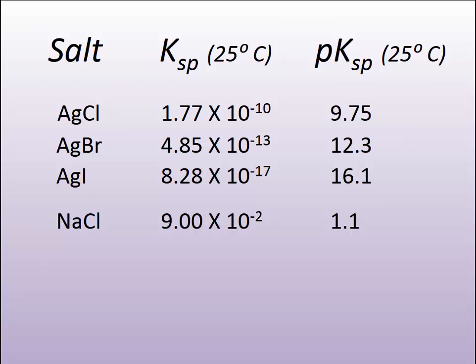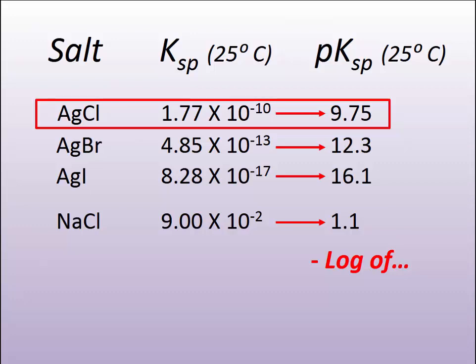we do the same trick that we do for pH. The little p means negative log of. So I can take these bigger numbers and convert them into the negative log of values, much like we do with pH. So 1.77 times 10 to the minus 10 is equal to 9.75 pKSP.